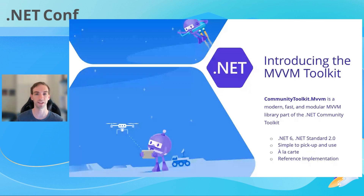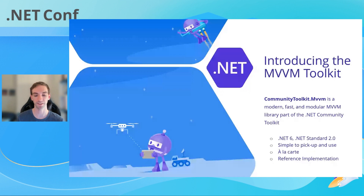Lastly, it's also meant to be a reference implementation. In the BCL, there are many interfaces foundational for MVVM, such as INotifyPropertyChanged or ICommand, but they don't have an implementation out of the box. The MVVM Toolkit provides that in an unopinionated way so you have a reliable implementation for all your MVVM scenarios. So instead of going through more slides, I wanted to dive into an actual demo to show how you can use the MVVM Toolkit in your MAUI application.